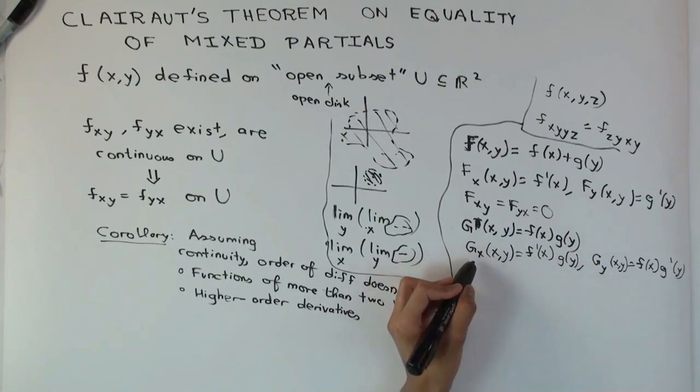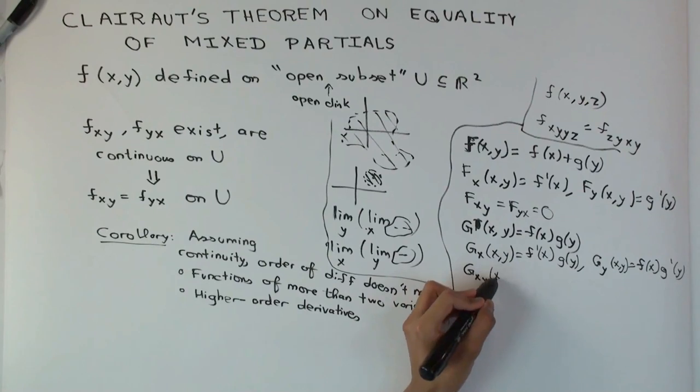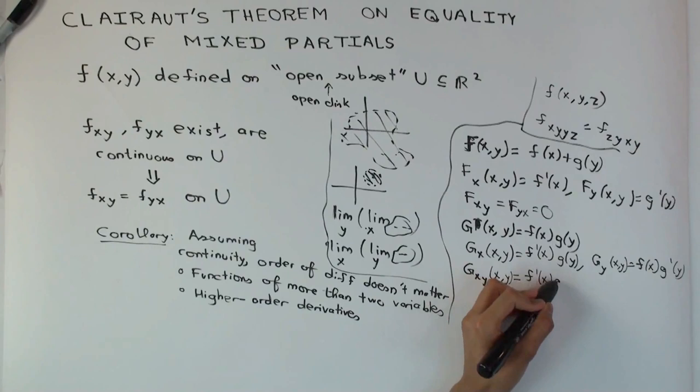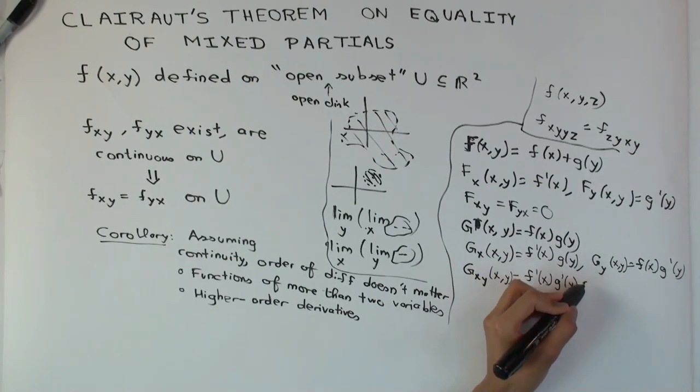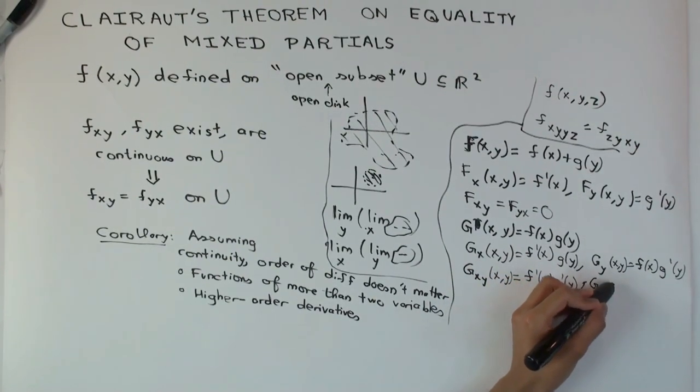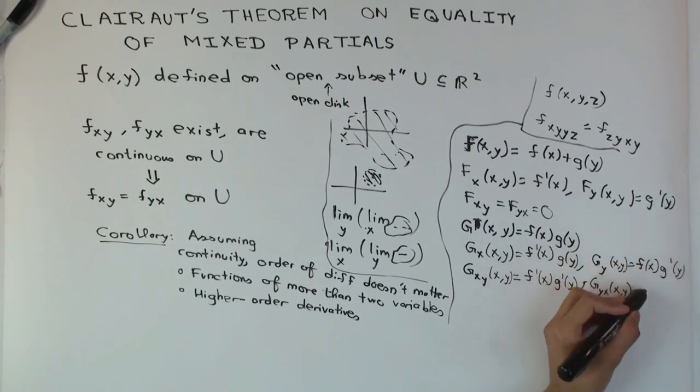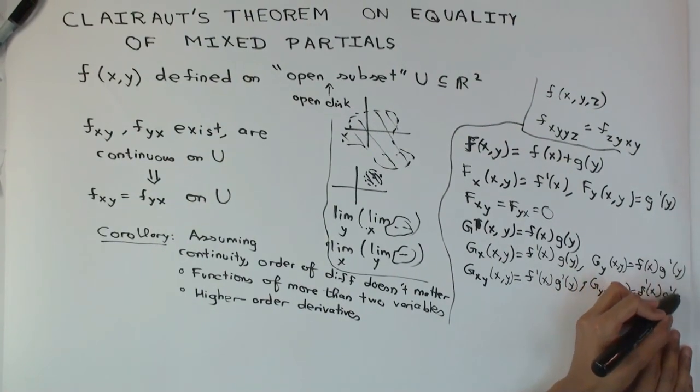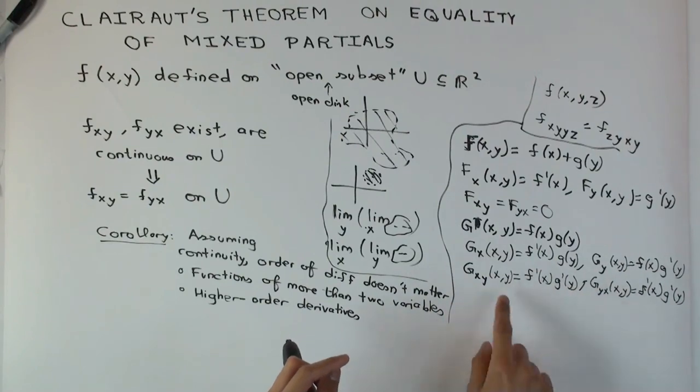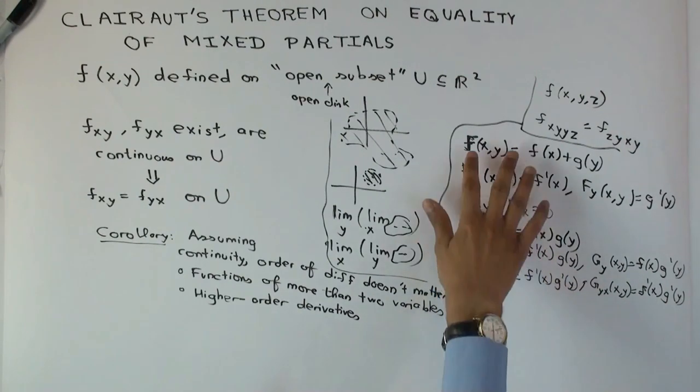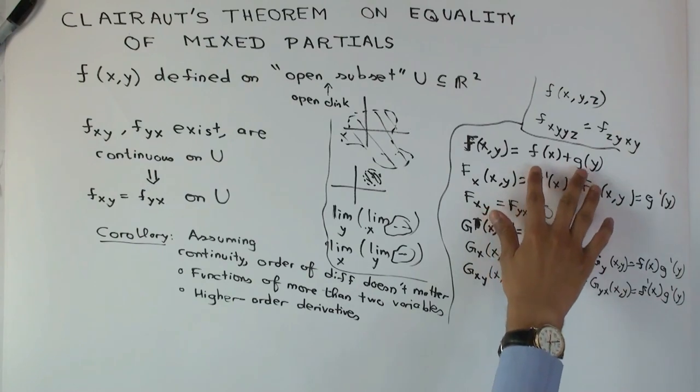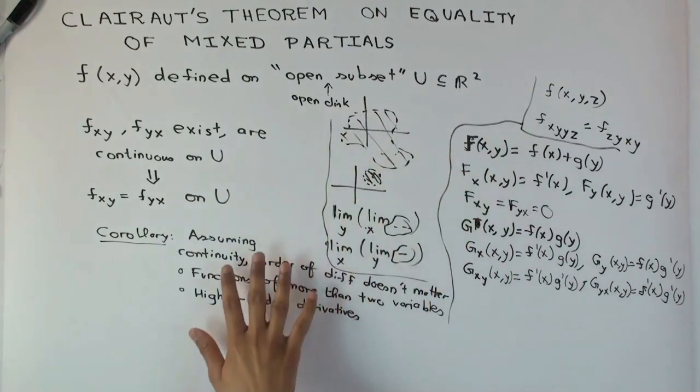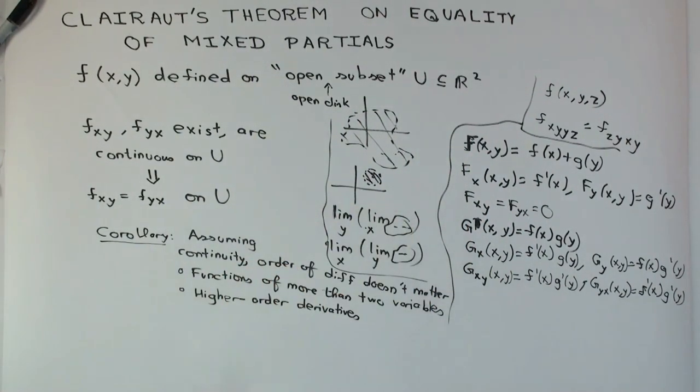Now if you do g sub xy, f prime x is the constant, so you get f prime x times g prime y. You get the same result for g sub yx. So these two are equal. For both of these, I'm assuming f and g are both differentiable functions. Otherwise, you couldn't take these partials. But this proves the theorem in these special cases without having to see the full proof.